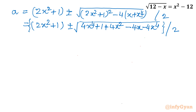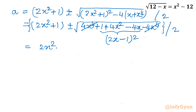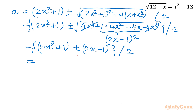You can see the 4x to the power 4 and minus 4x to the power 4 cancel out. What is left inside the square root is 1 plus 4x squared minus 4x, which is (2x minus 1) whole square. So ultimately we have (2x squared plus 1) plus or minus (2x minus 1), divided by 2. Taking plus sign gives one quadratic form, and taking minus sign gives another form: x squared plus x and x squared minus x plus 1.